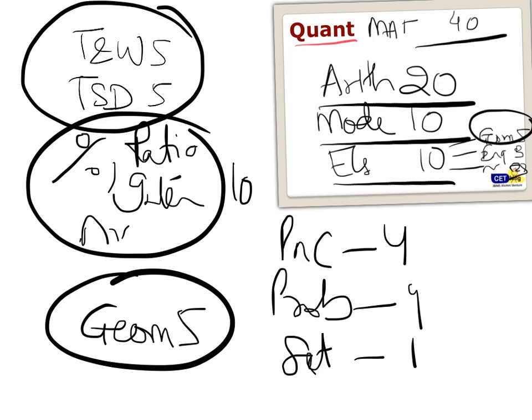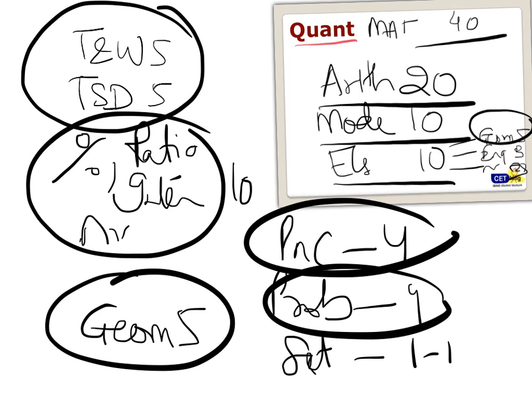APGP series, set theory - all this 1-1-1 you can get. So P&C, probability, if you have time do them as well. Must do topics: time speed distance, time and work - you can't ignore them. Percentages, ratios, interest - you can't ignore them. Geometry - you can't ignore that.